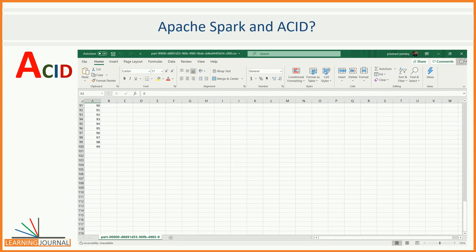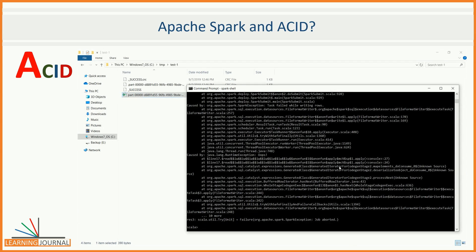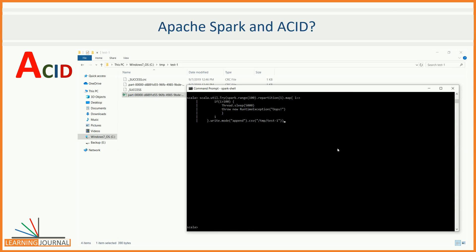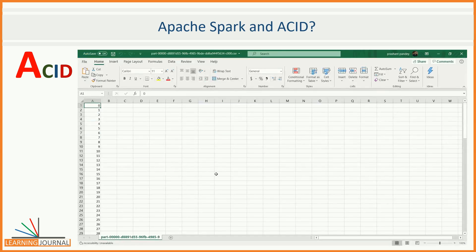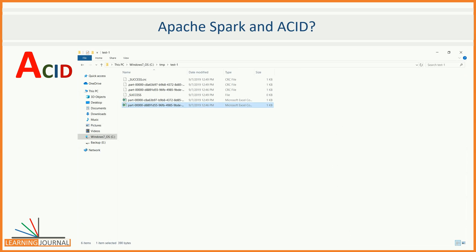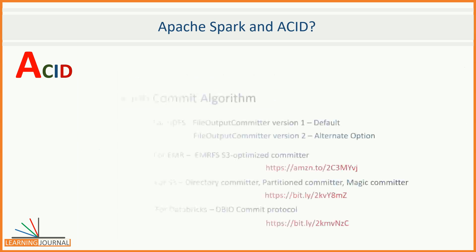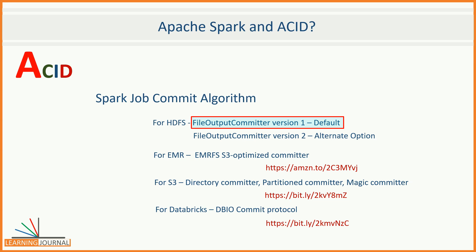What if the append completed successfully? Let's change the code a little and execute it again. It won't reach more than 100 and will never raise an exception. We got another file with 100 records, so now you have 200 records in this directory. It seems like Spark write is atomic because we saw all or nothing working here. By default, Spark uses Hadoop's FileOutputCommitter version 1 algorithm to implement job commit and abort, and as a result we get some degree of atomicity.